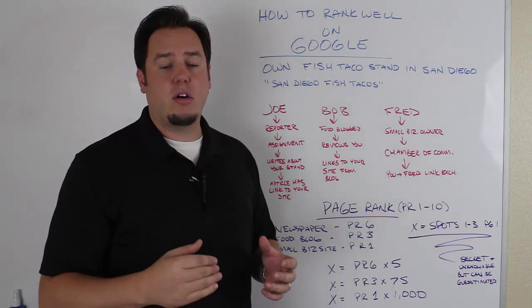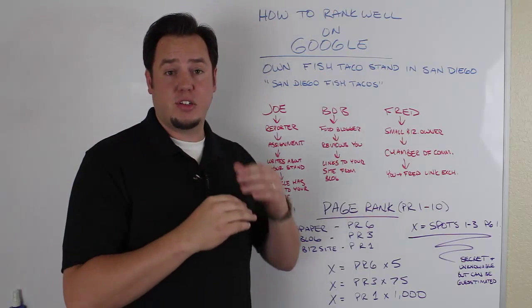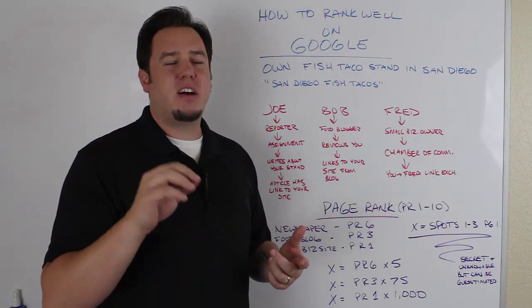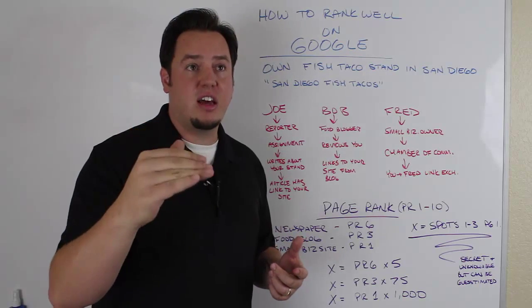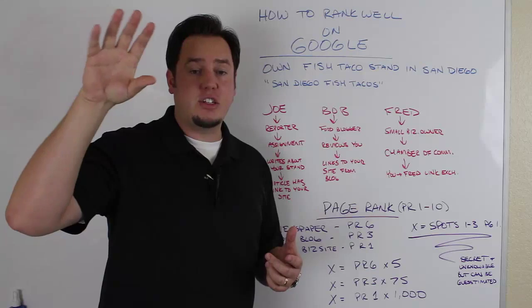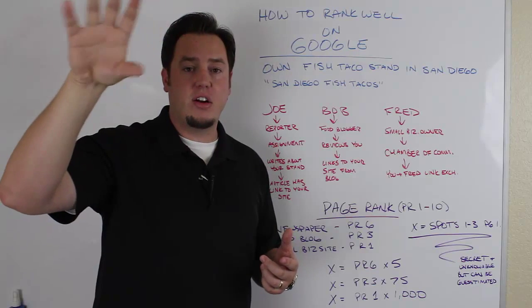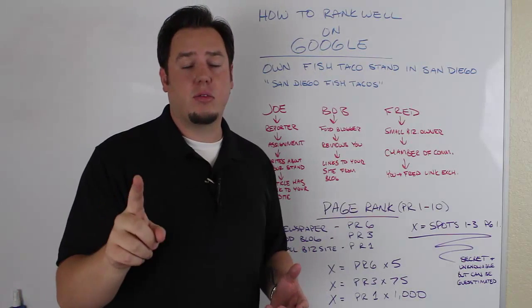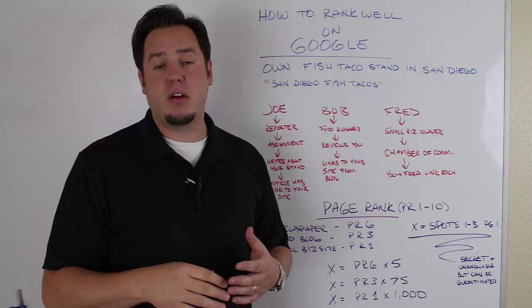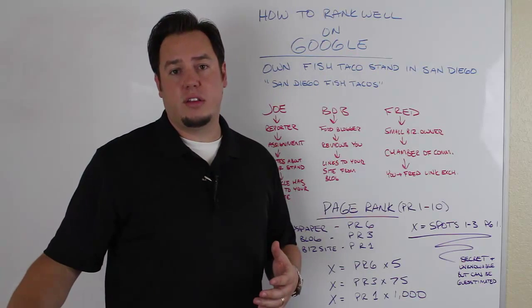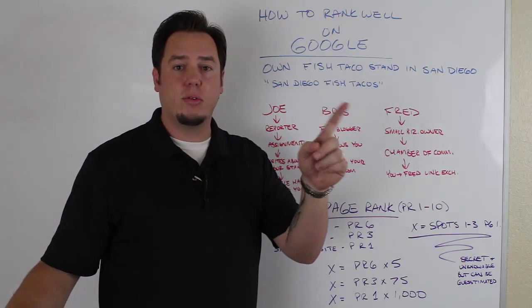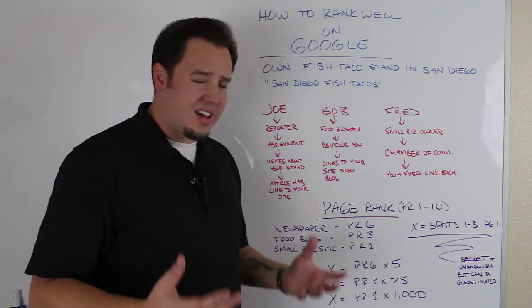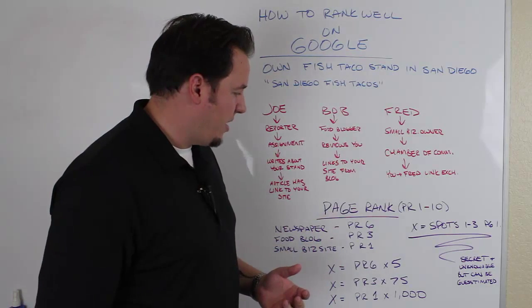But this is basically how it works. You know, if you've got a link from a PR10 website, which is the best, that's going to be something like Fox News, CNN, MSNBC, one of those major multinational, international news agencies, that might be a PR10. And whereas a website I just set up yesterday, it's only one page and has three words on it, it's going to be a PR1. You could have 100,000 links from those little PR1 sites, and they'll never equal a single link from a PR10 website. So this is kind of a guesstimation, but to kind of break it down for you, that's kind of the way it works.